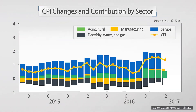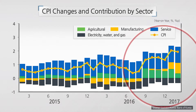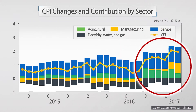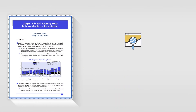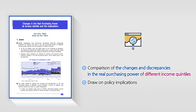The recent rise in inflation, driven mainly by oil and agriculture product prices, has given rise to concerns that the living conditions of low-income households are worsening. Accordingly, this study analyzes the changes and discrepancies in the real purchasing power of different income quintiles and draws on the implications to examine the increase in burden of low-income households.